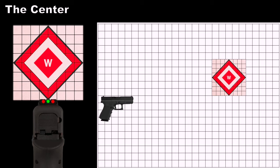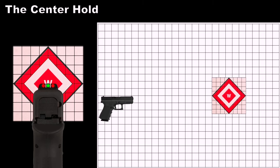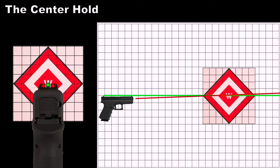To use the center hold method, while maintaining proper sight alignment, place the top of your front sight in the center of the target to maintain consistent elevation. This is the most widely used method for various forms of target shooting. This method is effective for any size target.